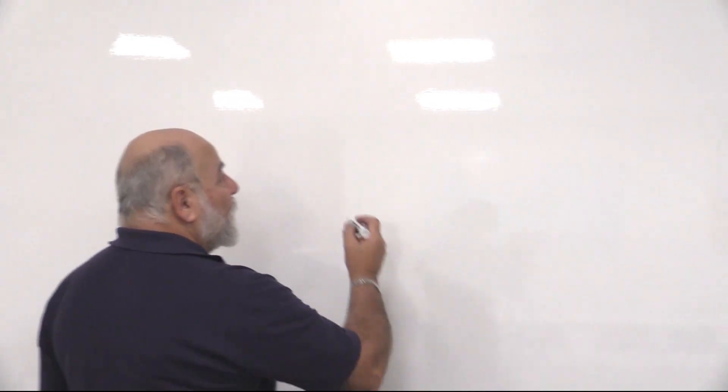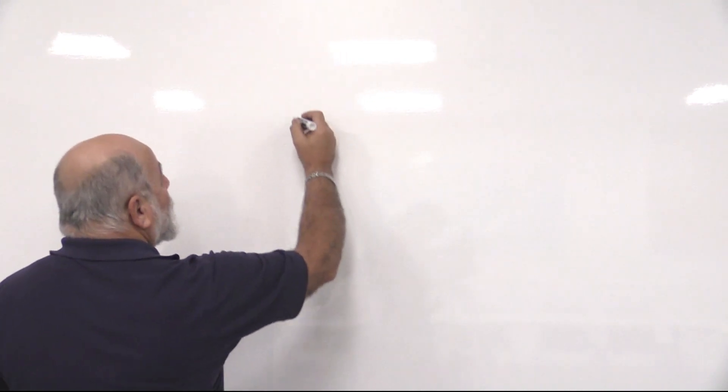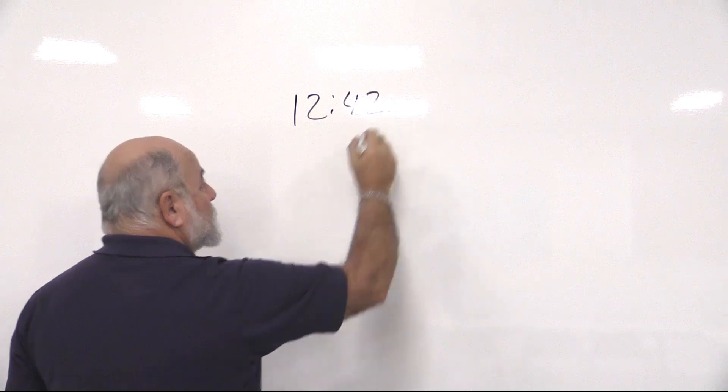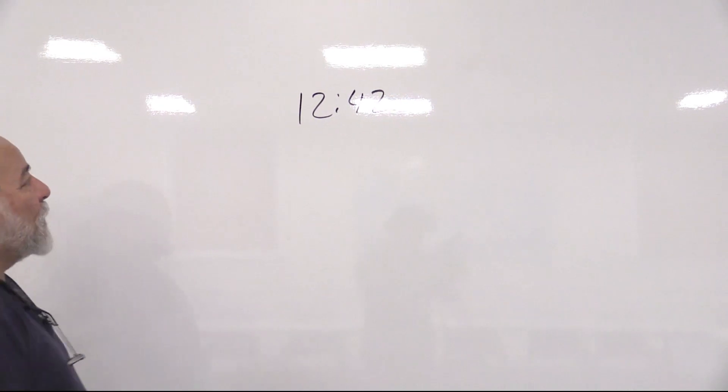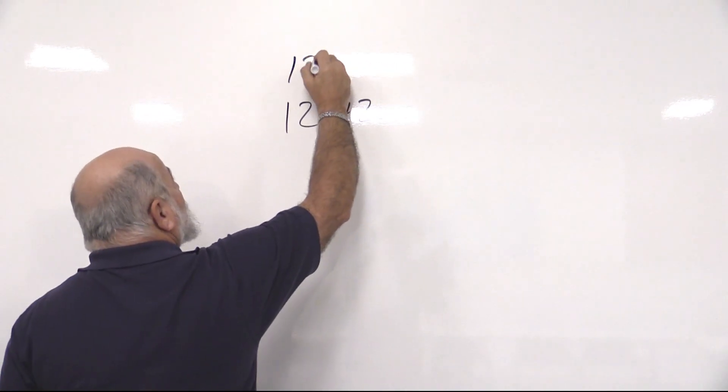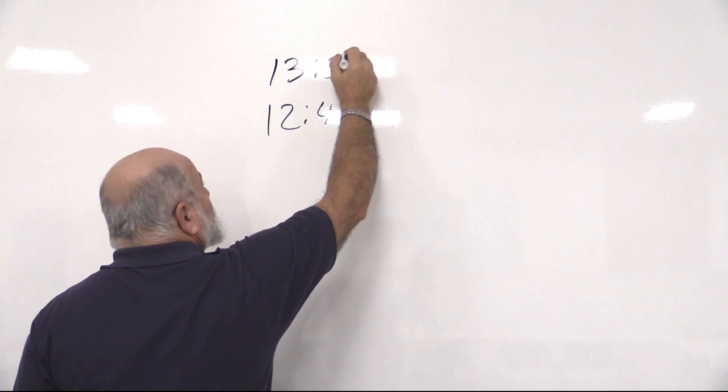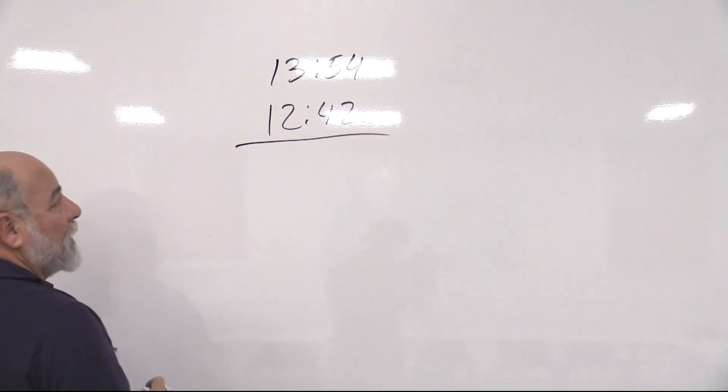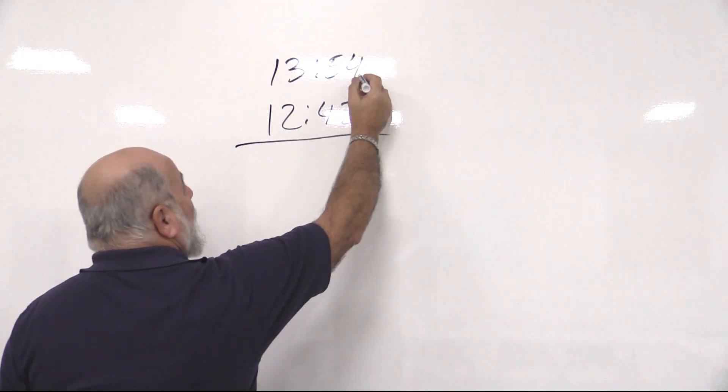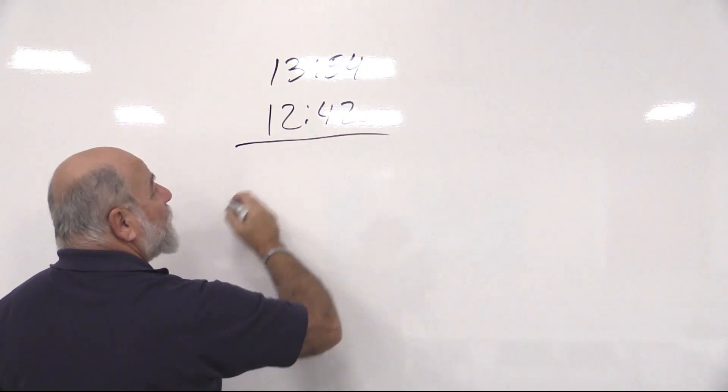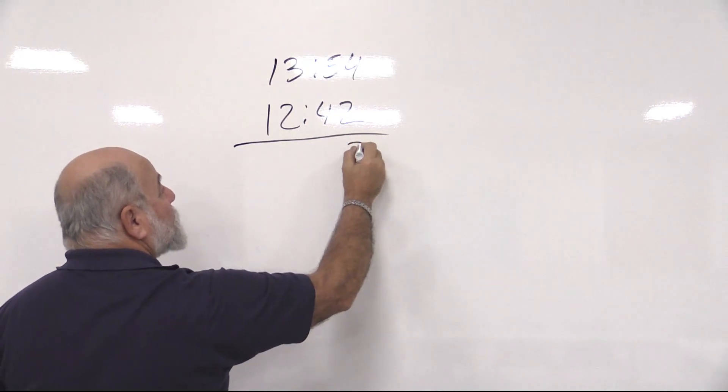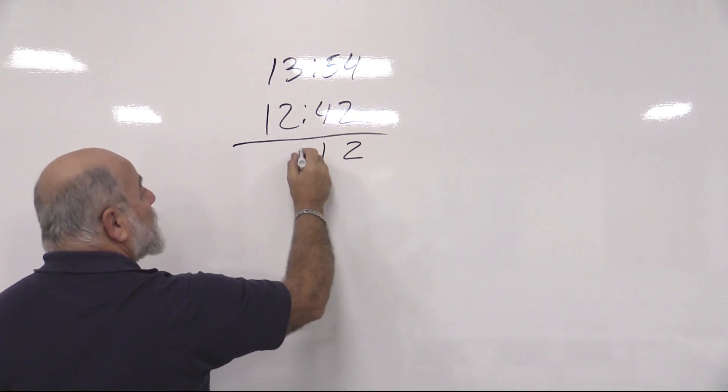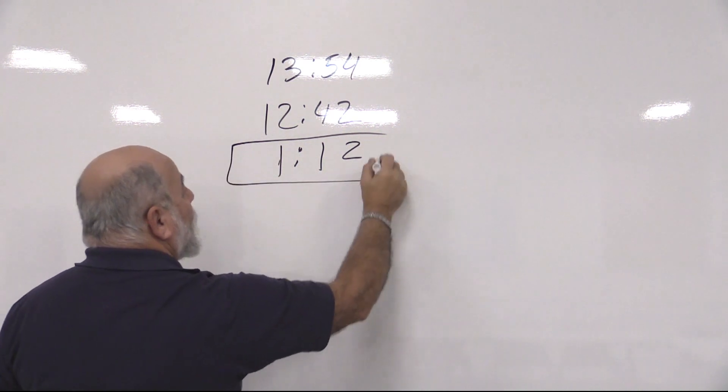We would get a Coast Guard question that said you leave a certain place at 1242. At 1354, you find yourself somewhere else. How long were you underway? Simple math: big number on the top, little number on the bottom. 4 minus 2 is 2, 5 minus 4 is 1, 13 minus 12 is 1. You are underway for 1 hour and 12 minutes.